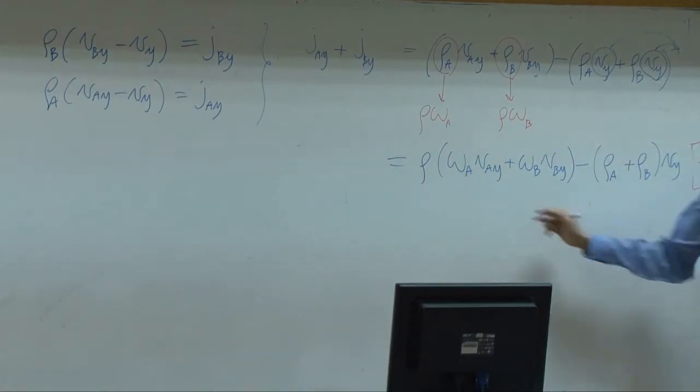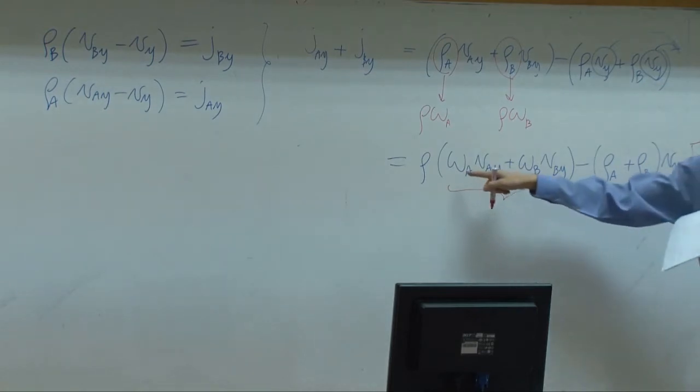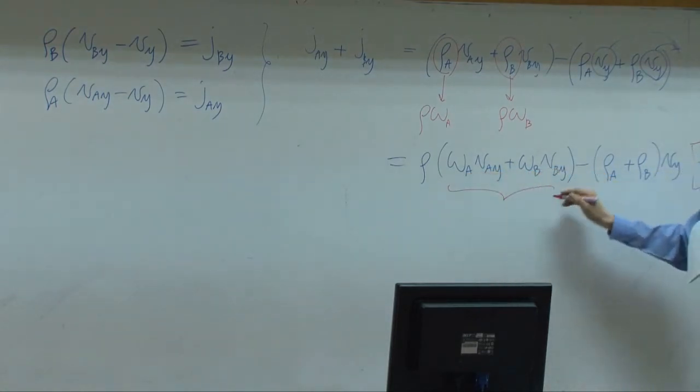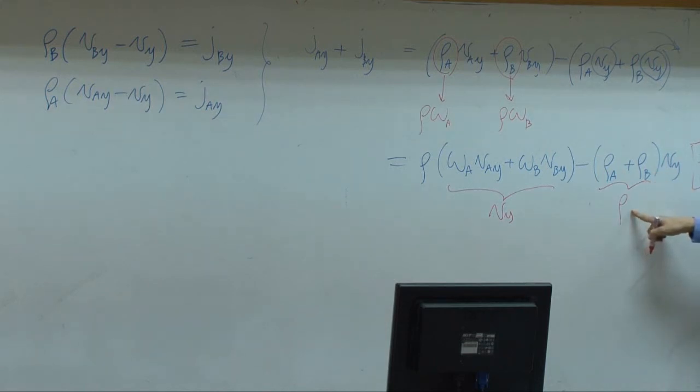What is this term? It is here. So the combination of rho omega A V A plus omega B V B is equal to Vy. That means you have rho Vy minus this term, summation of rho A and rho B equal to total concentration. That's why these two terms would cancel out. You're getting zero. So flux of A plus flux of B is equal to zero.